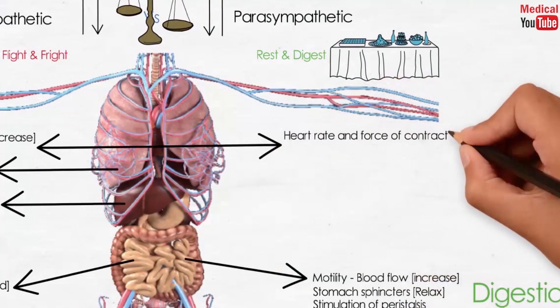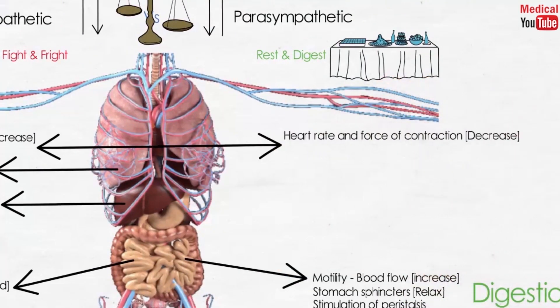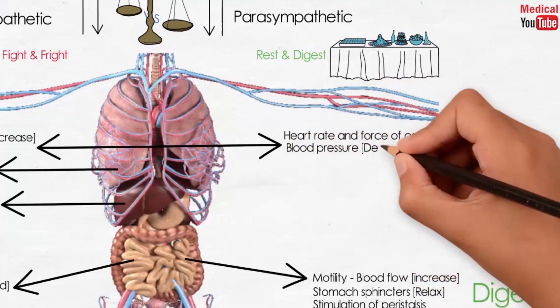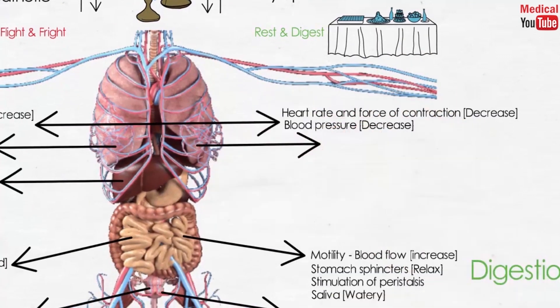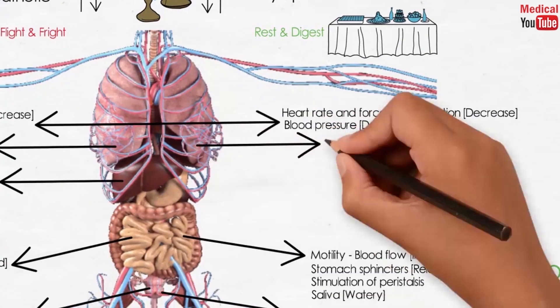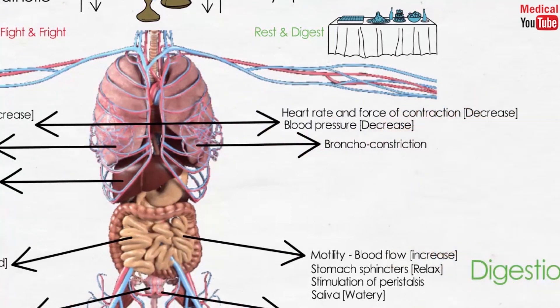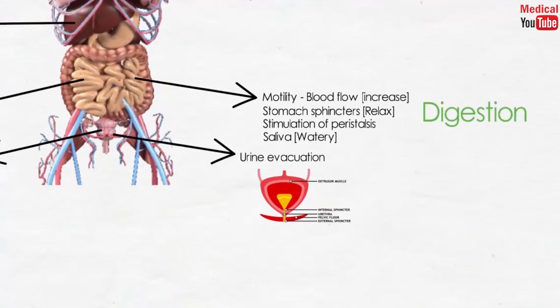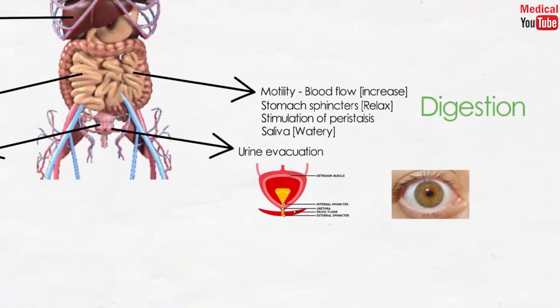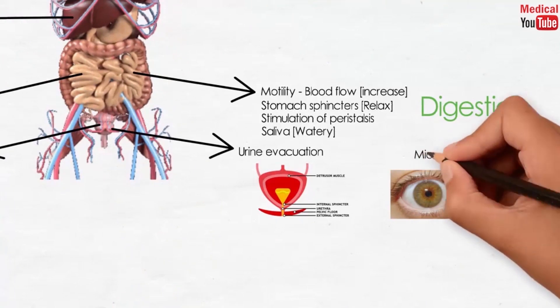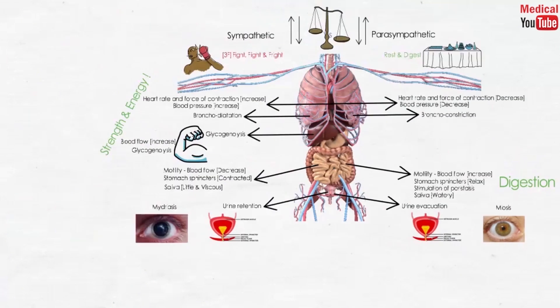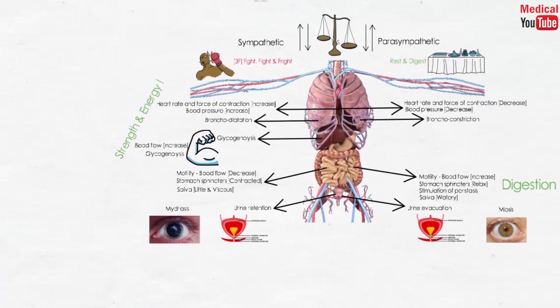Heart rate and contraction decrease, blood pressure decreases, bronchoconstriction occurs in the lungs, and the eye pupil gets constricted, which is known as miosis. The parasympathetic actions completely oppose the sympathetic actions.